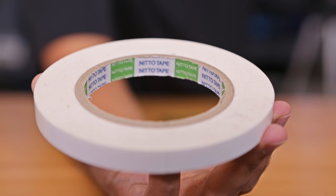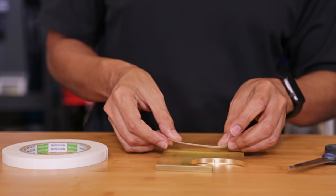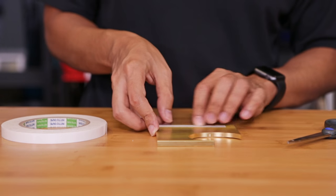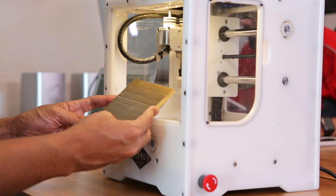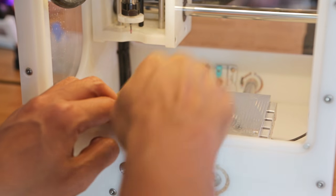To secure the material to the spoil board, I'm going to use Nitto Tape, which is an industrial grade double sided tape. I need to make sure the material is placed on the lower left side of the bed and try to be as square as possible.